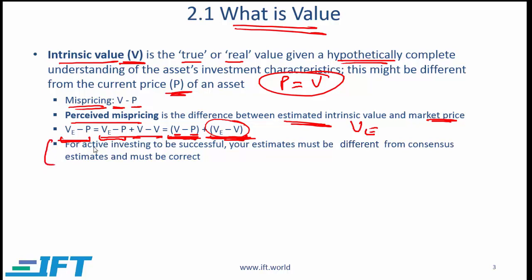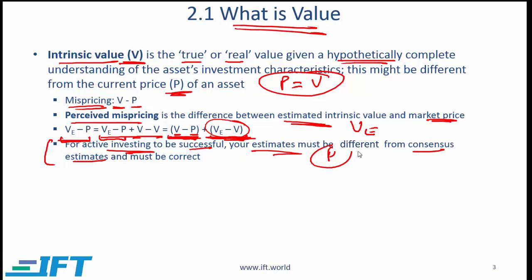This is stated in the curriculum as follows: for active investing to be successful, your estimates must be different from consensus estimates and must be correct. In this context, consensus estimates represent the market price, because market price is generally based on what the majority is expecting.